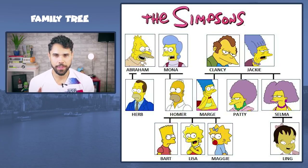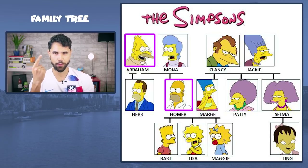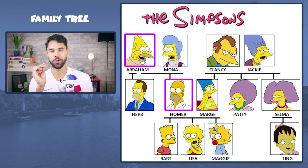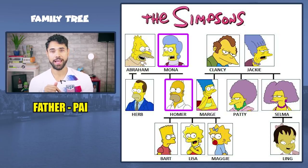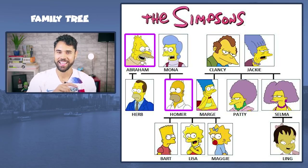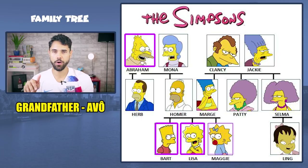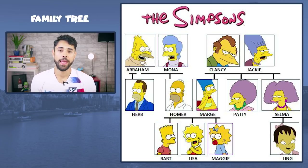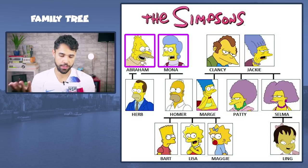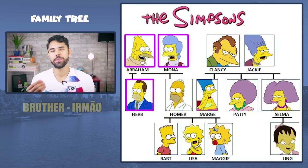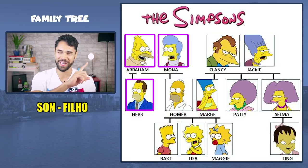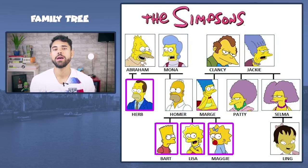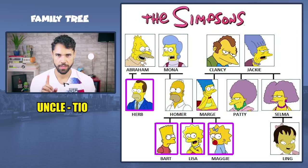Agora eu vou voltar um pouquinho lá no começo da Family Tree com o pai do Homer, que é o Abraham. Ele é o father do Homer. E a Mona é a mother do Homer. O Abraham ele é nada mais do que o grandfather dos três filhos do Homer — avô. Já a Mona é a grandmother — avó. Eles tiveram um child, uma criança, que agora já é um adulto, que é o Herb. Que é o brother do Homer e é o son do casal, da Mona e do Abraham. E ao mesmo tempo ele é o tio dos três filhos do Homer. Então ele é o uncle — tio.